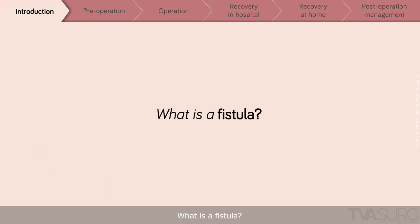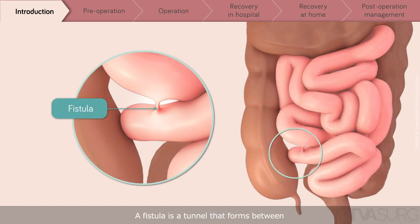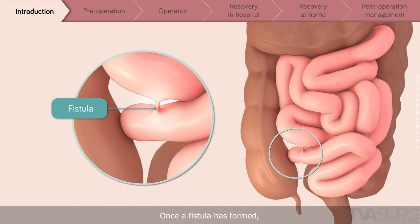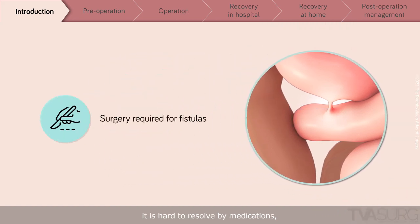What is a fistula? A fistula is a tunnel that forms between two or more parts of the body, for example between bowel loops. Once a fistula has formed, it is hard to resolve by medications, and surgery to resect that part of the bowel may be required.